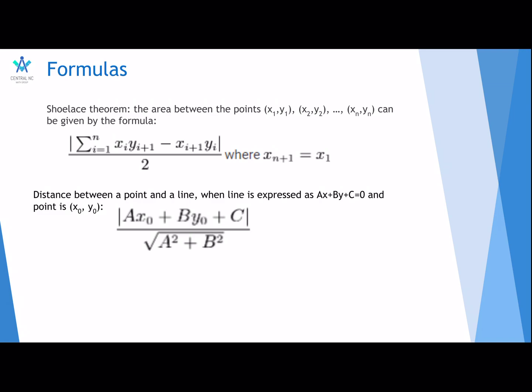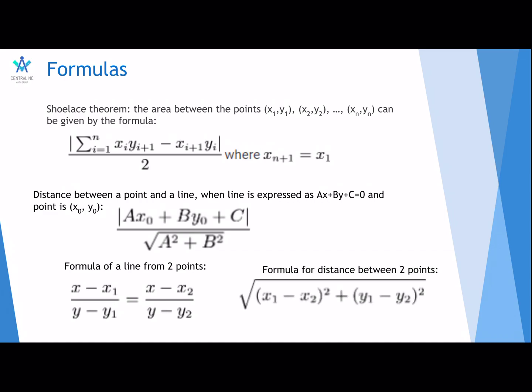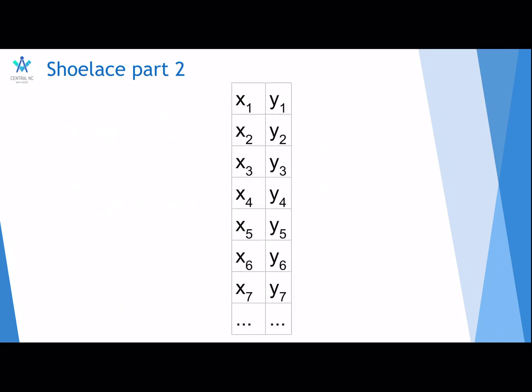This is the distance between a point and a line theorem. This is one of the few theorems that you need standard form for. This is the formula of a line from two points. It's basically just stating that the slopes are the same. And this is the formula for a distance between two points. It's very basic.